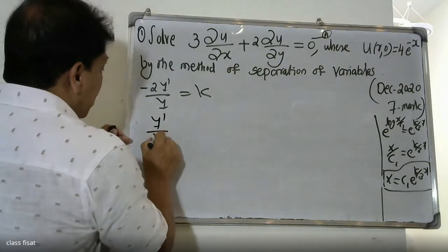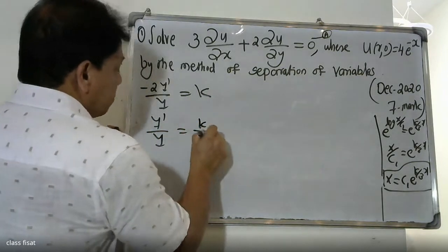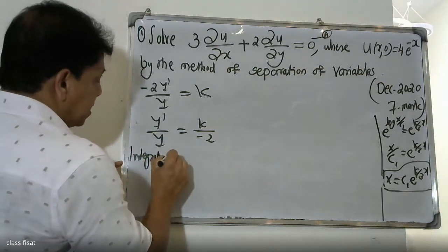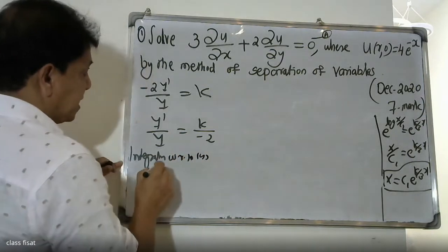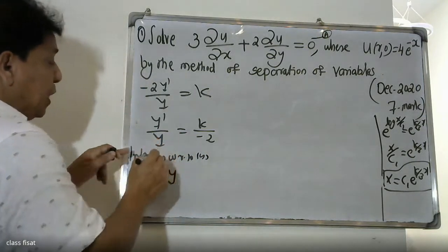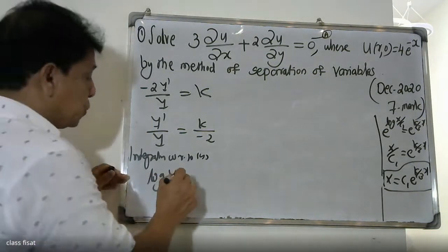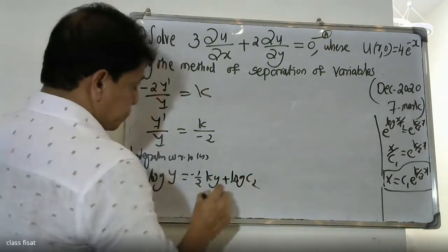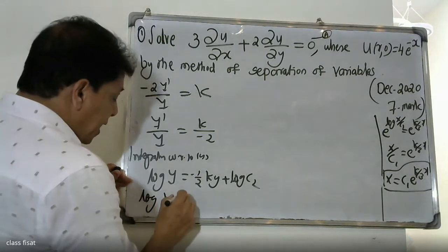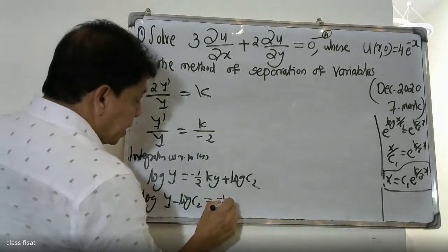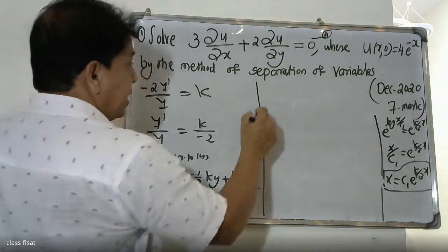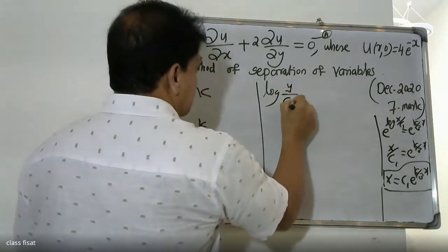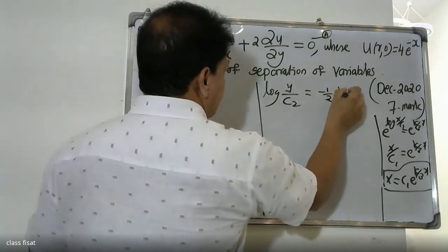For the y-side: −2·Y'/Y = k, so Y'/Y = −k/2. Integrating both sides with respect to y gives log Y = −(1/2)·k·y + log c2. Therefore log(Y/c2) = −(1/2)·k·y.